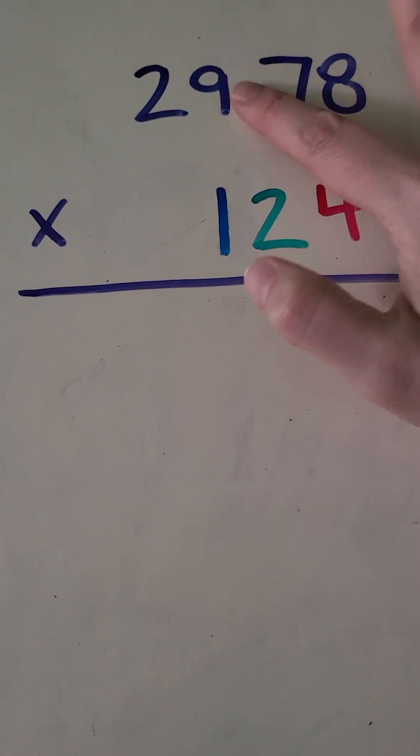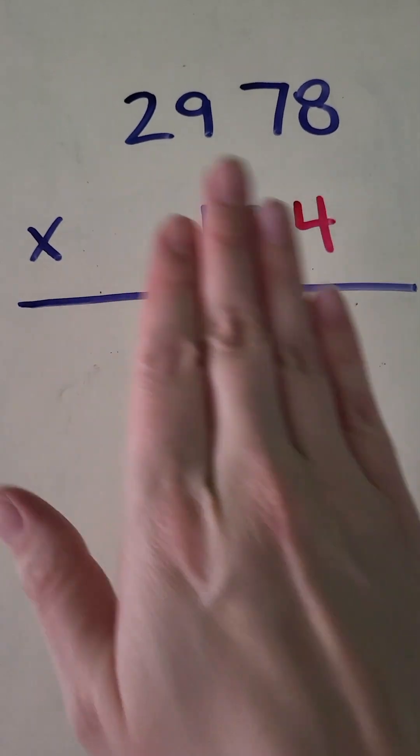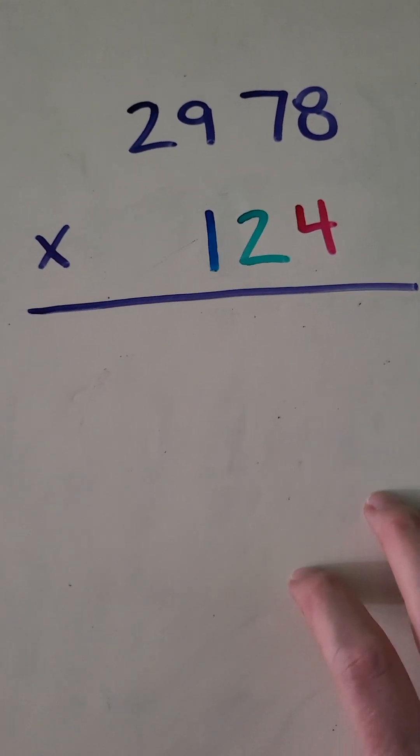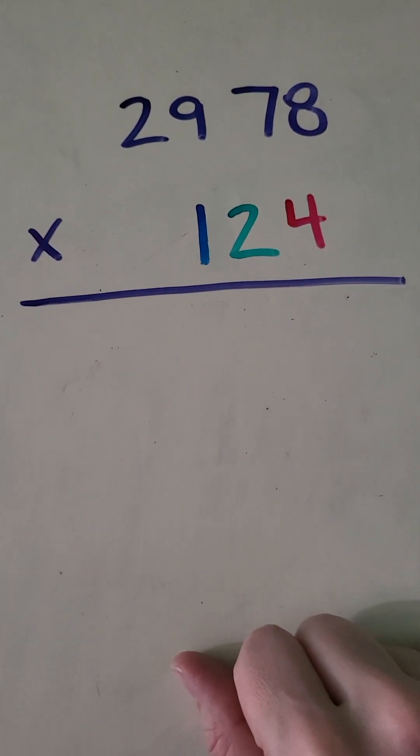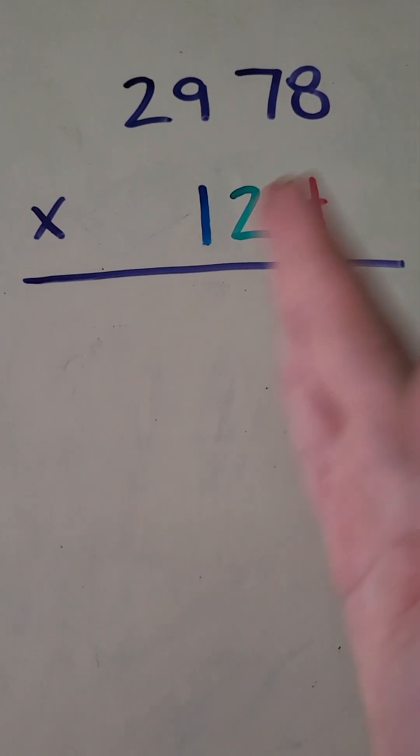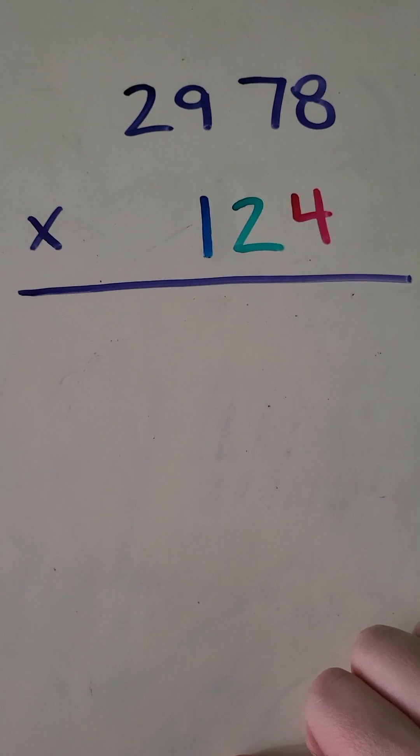So let's erase the decimal. We're going to pretend here we're working with the number 2978 times 124. And I have bedazzled my 124 a little bit because I would like to show you the step-by-step process and what exactly the place value is that we're dealing with here.